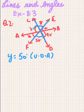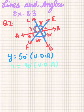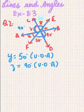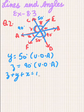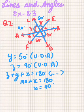Now, z will be equal to 90 degrees, again because these are vertically opposite angles. If we observe line AB, we have z equal to 90 and y equal to 50. We can easily find x because z plus y plus x equals 180 degrees — angles on a straight line. So 140 plus x equals 180 degrees.